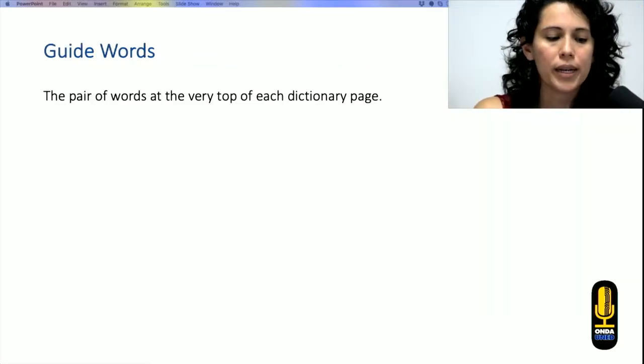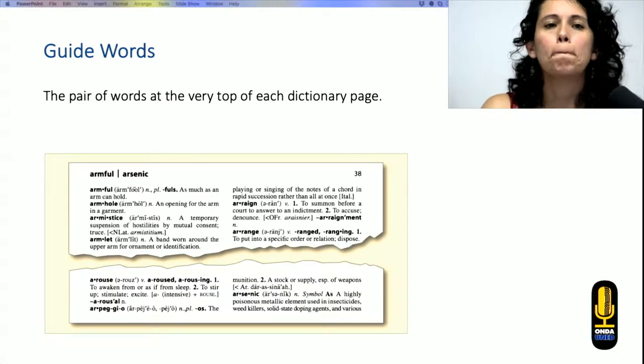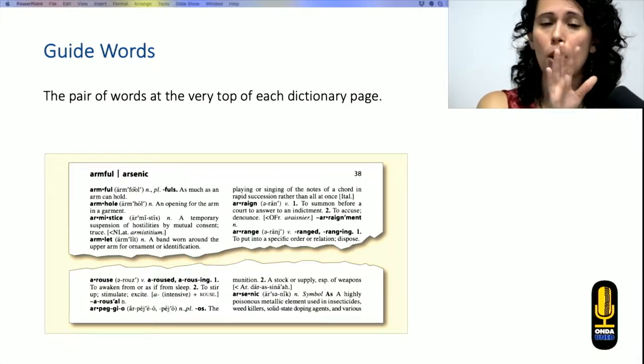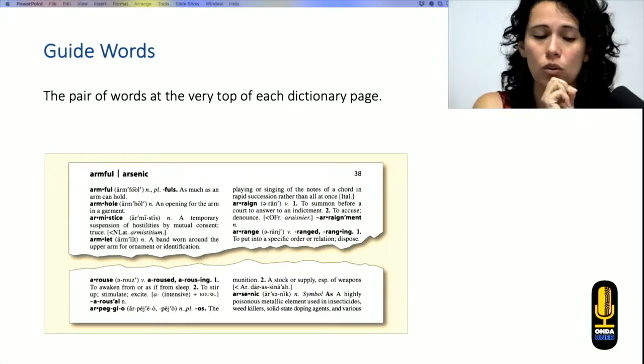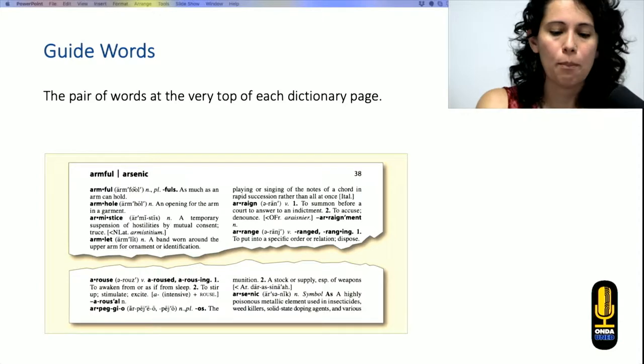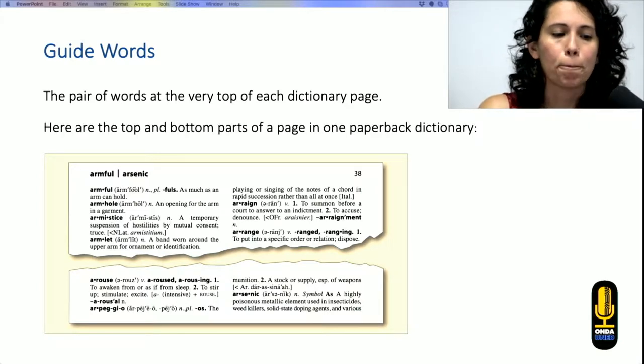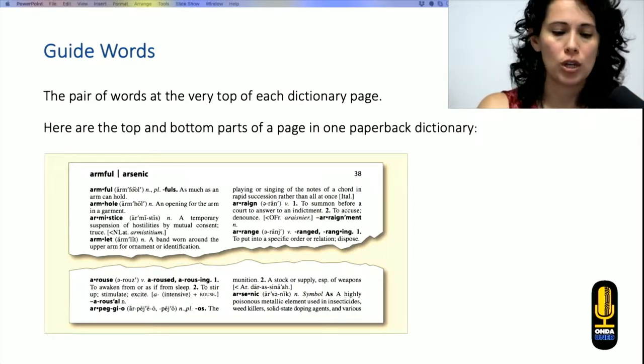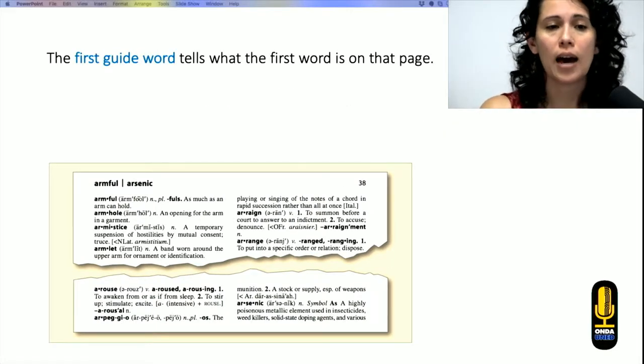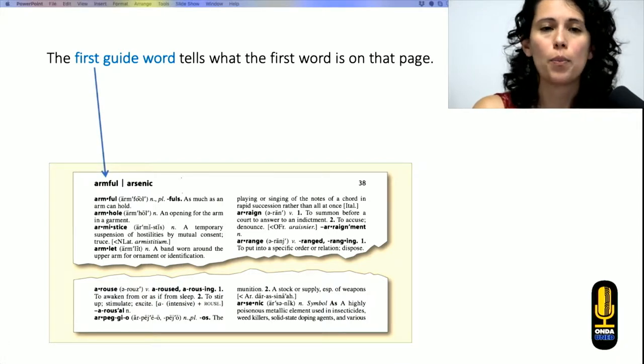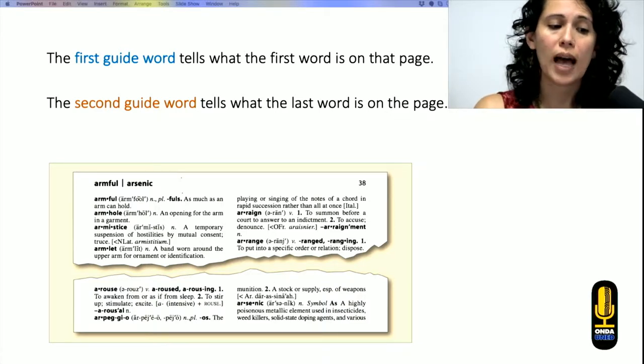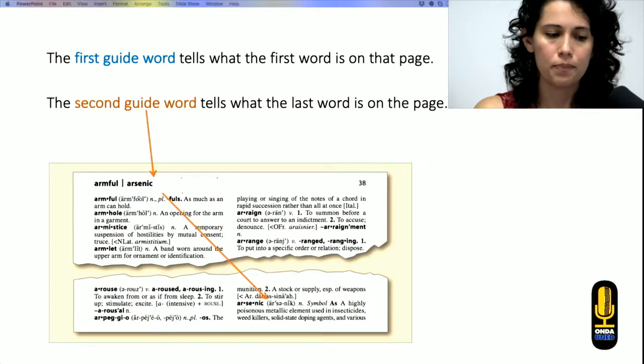Now, let's see what guide words are. So maybe you have wondered why, when you open the dictionary, you'll find on the top corner of the dictionary, two little words over there. They're called guide words. And basically, what they do is that they guide us in order to know which are the words on that page. So if you see here, the first guide word tells what the first word on the page is. And then the second guide word tells what the last word is on the page.